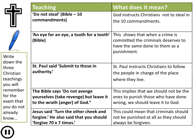Now we'll look at Christian teachings about crime. The first is simple — from the Ten Commandments: do not steal. God instructs Christians not to steal, so it is seen as going against God. Also in the Bible, in the Old Testament: an eye for an eye, a tooth for a tooth — implying that when a crime is committed the criminal deserves to have the same done to them in punishment, and could be used to justify capital punishment. St Paul said submit to those in authority — Christians are instructed in the Bible to follow the people in charge of the place where they live and always follow the rules of the country they're in. The Bible also says: do not avenge yourselves, but leave it to the wrath of God — implying we should not be the ones to punish those who have done wrong; we should just leave it to God.